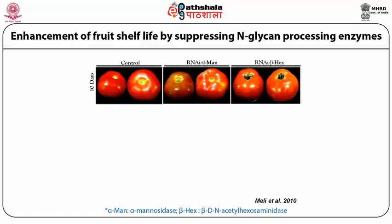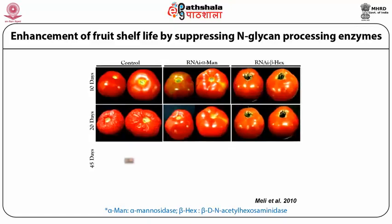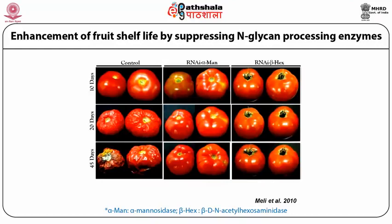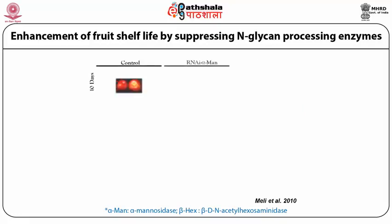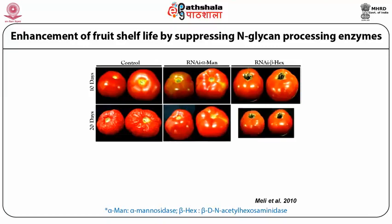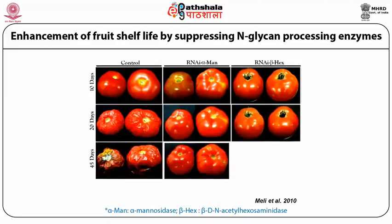After 10 days, after 20 days, and even after 45 days, you can see the shelf-life of fruit has been increased in the alpha-mann RNAi and beta-hex RNAi tomatoes, while the control is already gone.